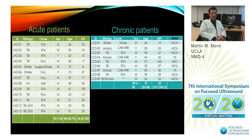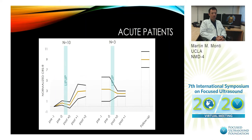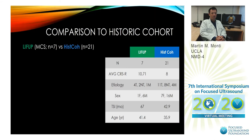We enrolled 13 acute patients and 9 chronic patients before getting halted because of the current circumstance. This was a mixed sample including both TBI and non-TBI patients. In terms of the acute patients, showing time on the x-axis and change from baseline on the y-axis, there is an overall upwards trend. However, we do not have a comparison cohort, so we cannot tell if this trend is due to our intervention or if it's spontaneous recovery.